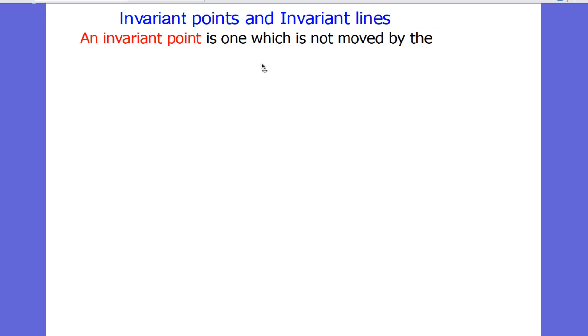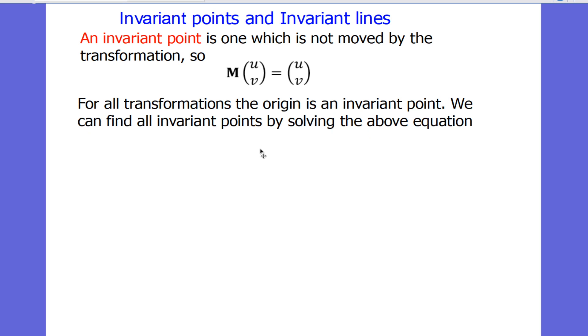They can be found by looking for an invariant point as one which is not moved, so when the matrix times the vector of the point equals the vector of the point, it is an invariant point. Of course the origin is always an invariant point, and we can see that because it's a solution to this equation. For any matrix we can then solve this equation, and this will tell us whether there are more invariant points than just the origin.